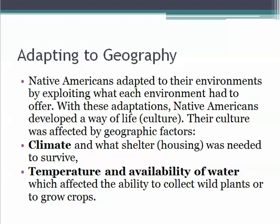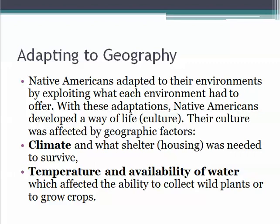Another adaptation was based on the temperature of the area and the availability of water, which affected the ability to collect wild plants or to grow crops to sustain them. They also had to adapt to the availability of animals for hunting, fishing, or for domesticating — in other words, for raising. The availability of other natural resources also mattered: whether they were building shelters, making clothing, or making tools, they had to have those resources nearby and would adapt to what was available in the area.